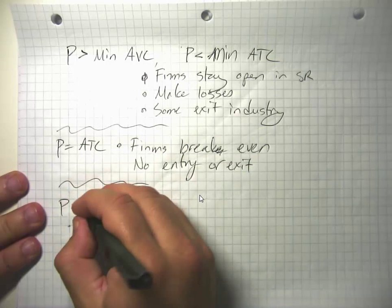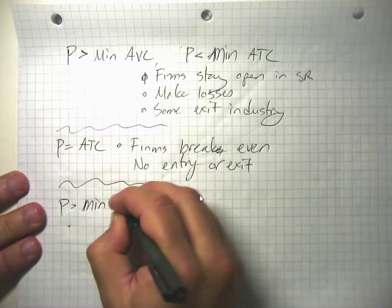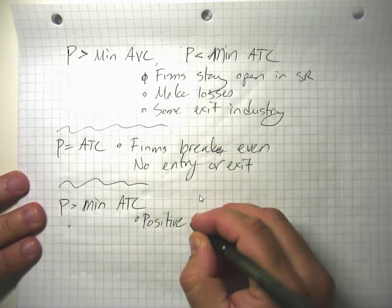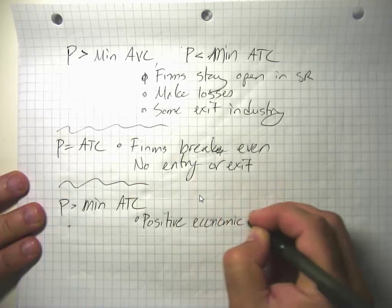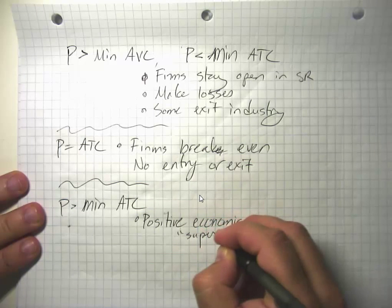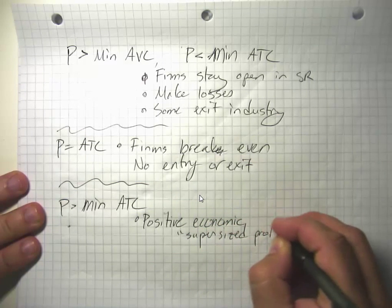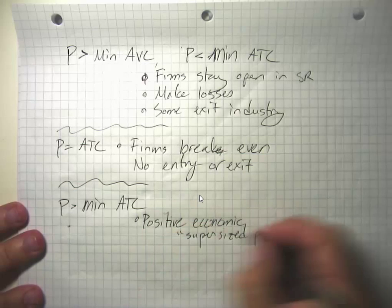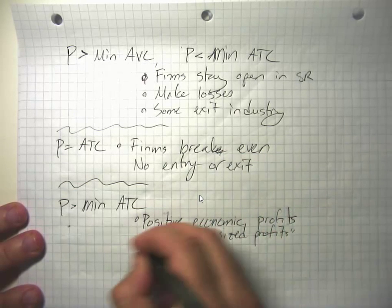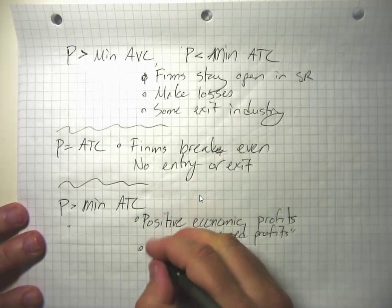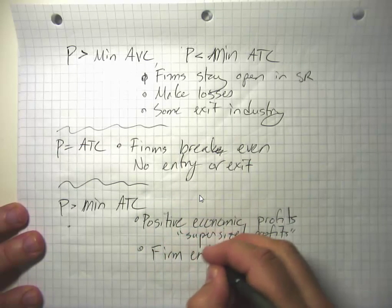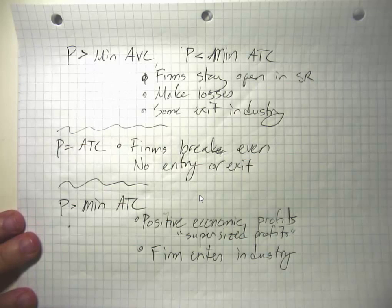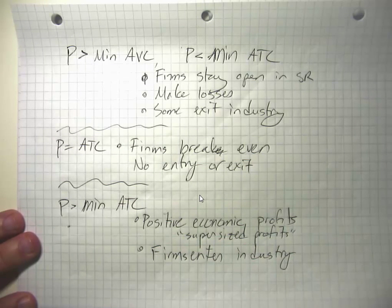If prices are greater than the minimum of ATC, then we have positive or above normal profits, positive economic profits or supersized profits. Supranormal is the technical term, but supersized sounds a lot better. This looks like a really attractive industry, and so new firms enter the industry. It could also be that existing firms decide to add capacity.